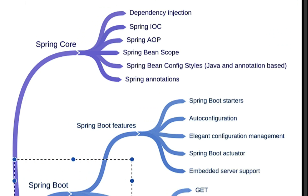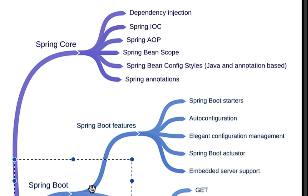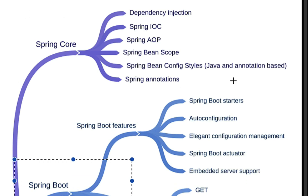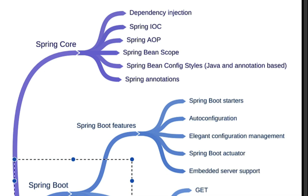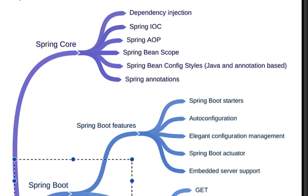Spring Boot is basically developed on top of the Spring Framework, and internally uses all the Spring Core basics and all Spring-related libraries. In order to understand how Spring Boot works behind the scenes and how Spring Boot auto-configuration works, you need to learn Spring Core fundamentals first.